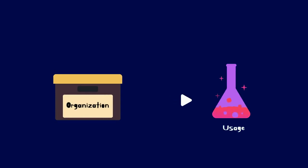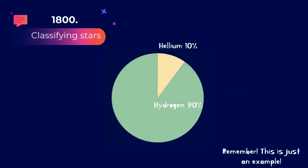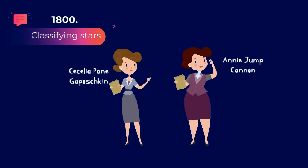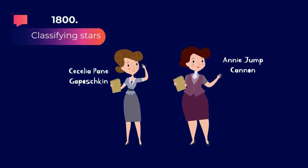It all started in the 19th century, when scientists classified stars by their hydrogen supply. There was one spectroscopist named Annie Jump Cannon who didn't agree with this classification system. She and Cecilia Payne-Gaposchkin changed the way we organize stars.